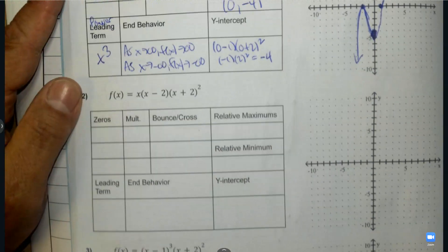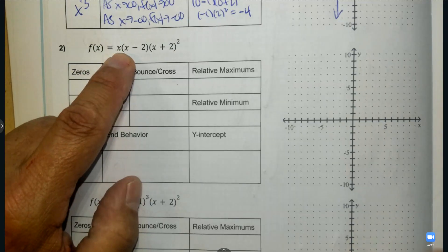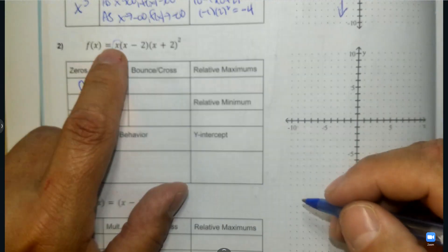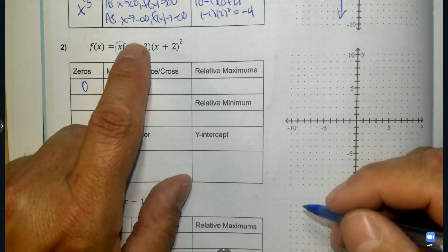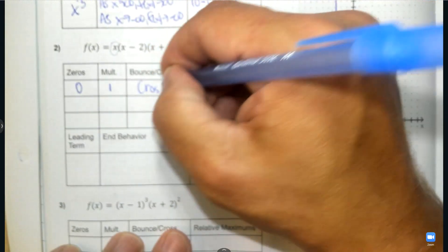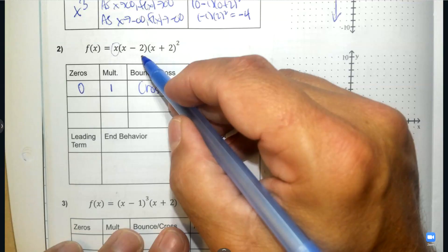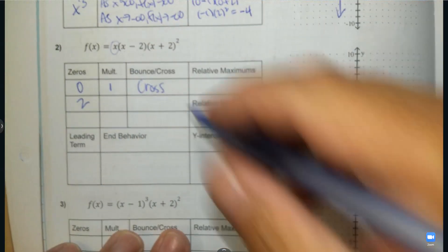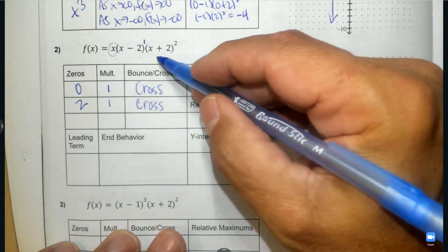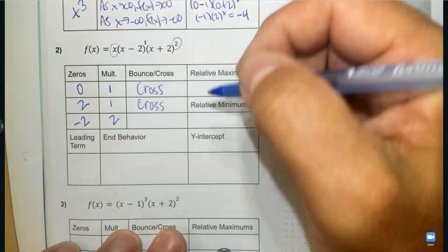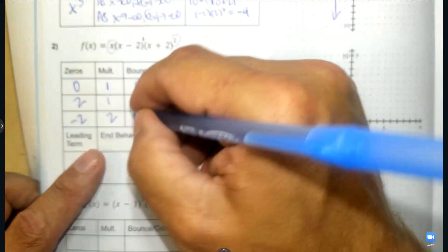Let's try another one — number 2. X: what number can I plug in for x to make it 0? It's 0. So if I put in 0, 0 times any number equals 0. The exponent on x that you can't see is 1 — that's odd, which means 0 is going to cross. The next factor: the opposite number to negative 2 is positive 2, exponent 1, so it's going to cross. The last factor: the opposite number to positive 2 is negative 2, with an even exponent, so it's going to bounce.